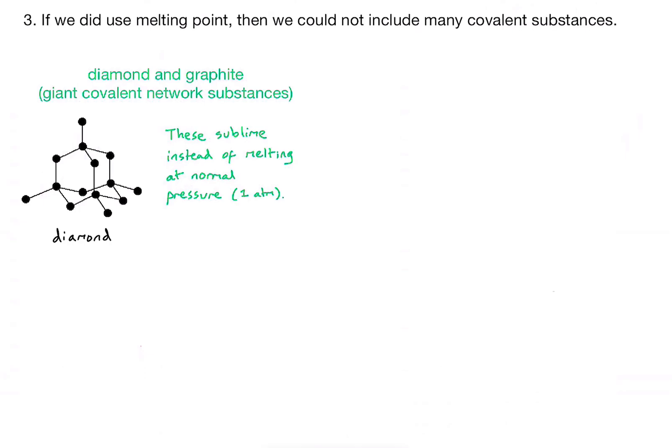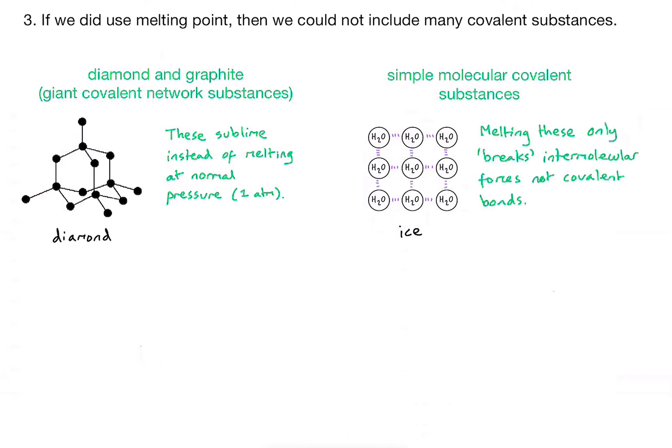Also, if I was considering some simple molecular substances, for example, if I were to take ice, which is solid water, if I melt ice, that might be useful information, but I'm not actually breaking any covalent bonds. So here's a simplified structure of ice. I've got individual water molecules. They are not bonded to each other with covalent bonds. They are held together by intermolecular forces. So to melt ice, what I'm doing is I'm giving enough energy to overcome these dotted lines, these intermolecular forces. I'm not actually breaking any covalent bonds, so the melting point does not tell me anything about the strength of those covalent bonds.